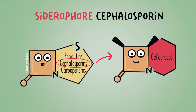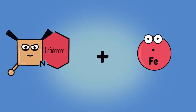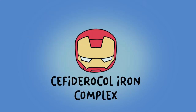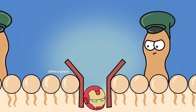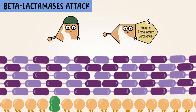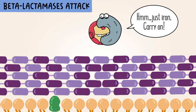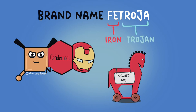Cefiderocol, a siderophore cephalosporin, has activity like other beta-lactam antibiotics but has a unique method of getting to the penicillin-binding proteins on the cytoplasmic membrane. It has a side chain that chelates with ferric iron, forming a complex that is then transported across the LPS layer of gram-negative bacteria into the periplasmic space. This helps it bypass many mechanisms gram-negative bacteria have for antibiotic resistance, such as beta-lactamases. It's considered a Trojan horse, as the brand name Fetroja hints at the mechanism of action similar to sneaking into the cell.